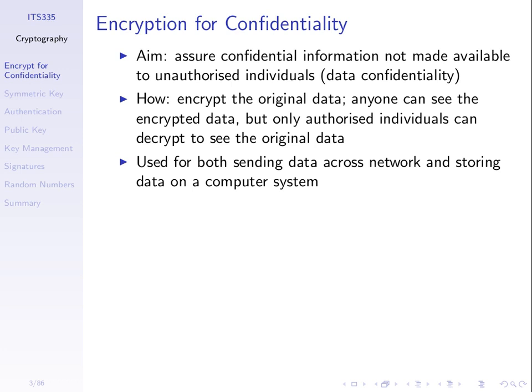Encryption is used for data confidentiality of information being sent across a network — in transit — but also for data at rest, data stored on a disk for example. I want to encrypt a file saved on my hard disk. I encrypt it, I save the encrypted file on my hard disk, and anyone who accesses my hard disk cannot get the original file unless they have the key.